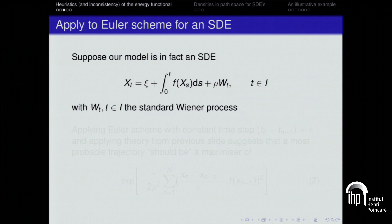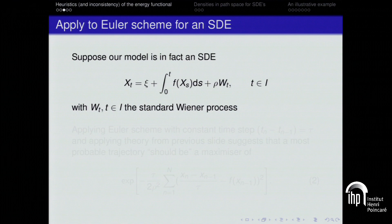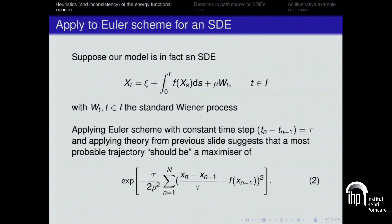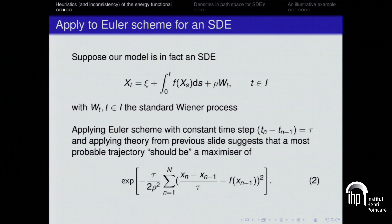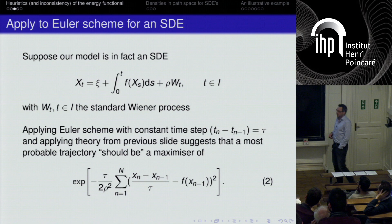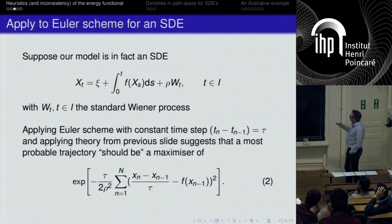Now suppose our model is a stochastic differential equation in integral form: x_t equals the initial condition plus the drift plus a Wiener process term with fixed noise intensity, over a finite time interval I. To find the most probable trajectory of this continuous-time model, one heuristic — found in several books — is to apply an Euler scheme with constant time step tau, apply the discrete-time theory, and conclude that the most probable trajectory maximizes a certain functional.